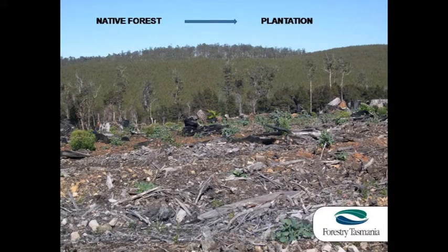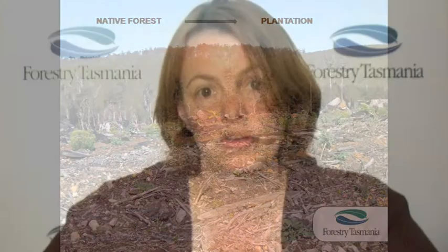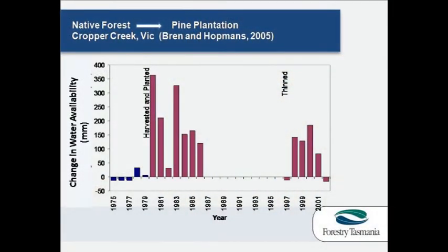We also know that if native forest is converted to plantation there can be changes in water availability. These changes are less clear cut than for pasture conversion — there may actually be an increase or a decrease, or the amount of water available could stay about the same. Here's an example from Cropper Creek in Victoria showing results when native forest was converted to pine plantation, and you can see that most of the time after harvesting and planting there has been an increase in water supply. The gap in the chart is because there was no government funding during that period and monitoring ceased.